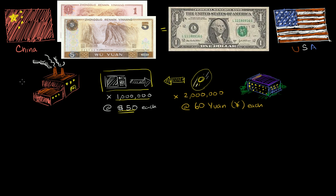I'm also going to assume that the only export from the US to China is software. And they have demand for 2 million units if they sell them at 60 yuan per unit.